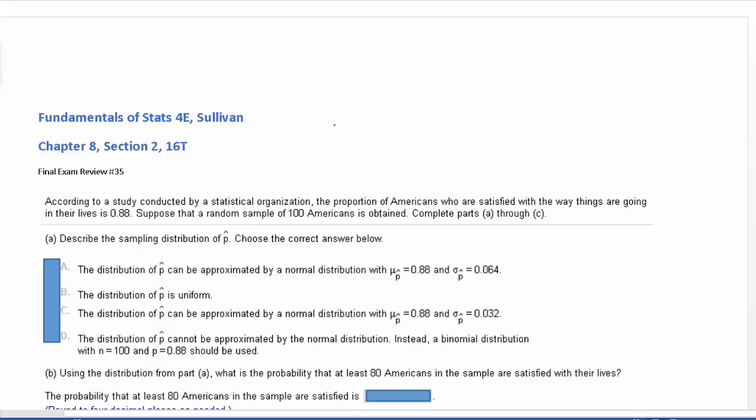According to a study conducted by a statistical organization, the proportion of Americans who are satisfied with the way things are going in their lives is 0.88. Suppose that a random sample of 100 Americans is obtained, complete Parts A through C.